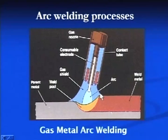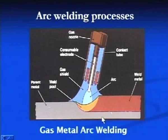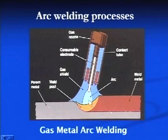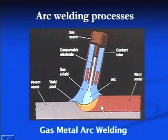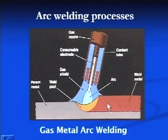When inert shielding gas is used, we call it the MIG process or metal inert gas welding process. When active gases like CO2 are used, it is termed the GMA process or metal active gas welding process.